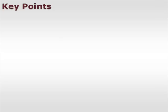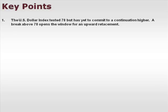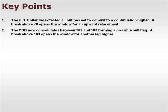Let's take a look at a few of our key points. First, the U.S. dollar index tested 78 but has yet to commit to a continuation higher. A break above 78 opens the window for a bigger picture upward retracement. The CDD now consolidates between 102 and 103, forming a possible bull flag. A break above 103 opens the window for another leg higher.